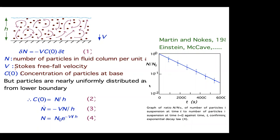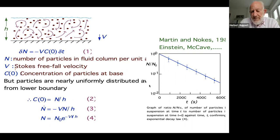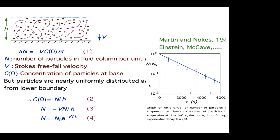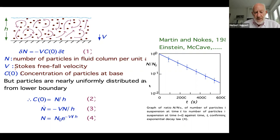To clarify: n is the number of particles in the fluid column per unit area. This is a uniform turbulent flow — we're looking at what happens when a uniform flow occurs. The flow is turbulent, but the particles fall with their free fall velocity, the Stokes free fall velocity. The turbulence doesn't play a role in their motion — except making them uniform.